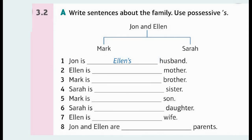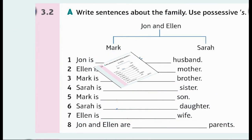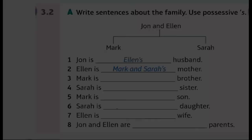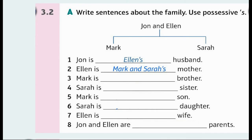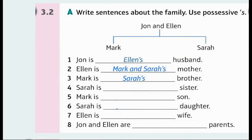Write sentences about the family using possessive 's. John and Ellen. Mark. Sarah. 1. John is Ellen's husband. 2. Ellen is Mark and Sarah's mother. 3. Mark is Sarah's brother.